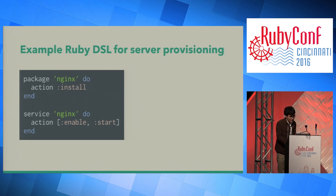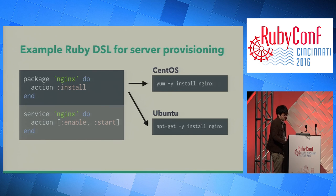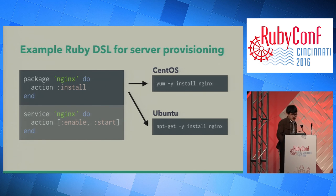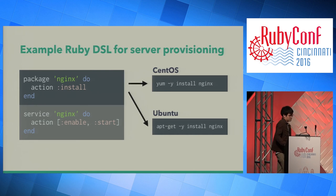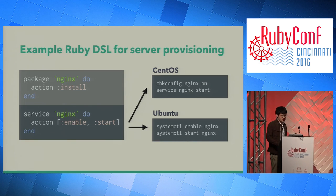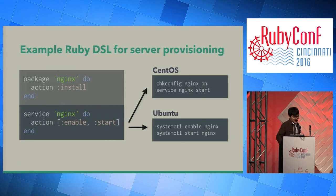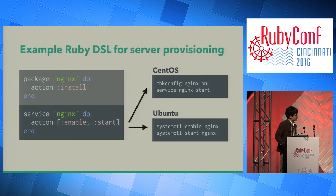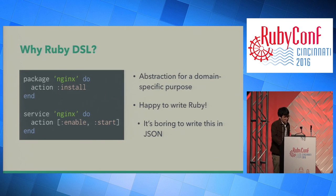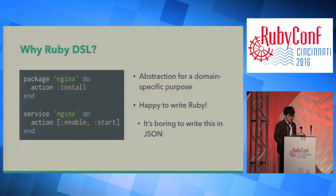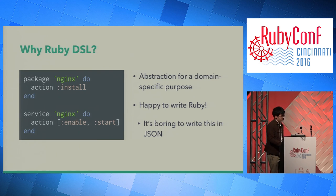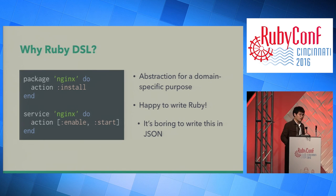This is the Ruby DSL I am talking about today. The first package is installing nginx, and this can work on both CentOS and Ubuntu. The next section is service-nginx, which enables nginx startup and starts the nginx process. As you can see, installing and starting nginx is abstracted away for different distributions, and we can configure it with Ruby. It's boring to write this in JSON, and because you are Rubyists, you are happy to write this configuration.